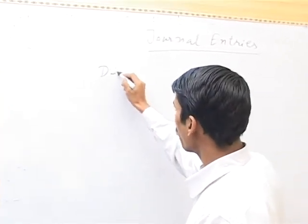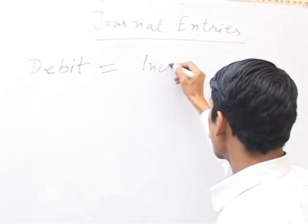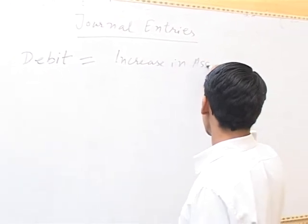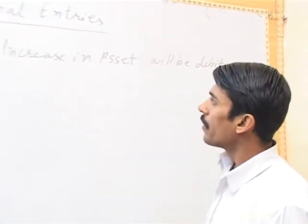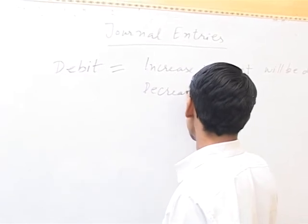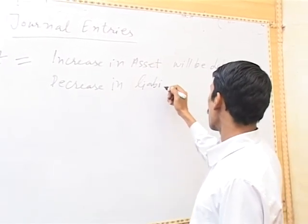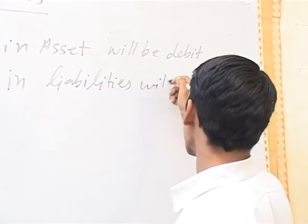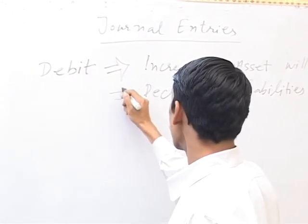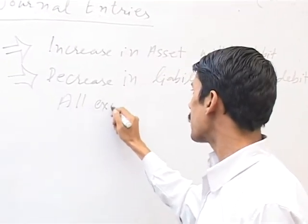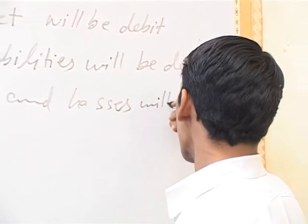First, I am teaching you simple rules for what will be debit. Increase in asset will be debit. Decrease in liabilities will be debit. All expenses and losses will be debit.